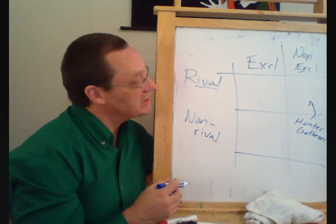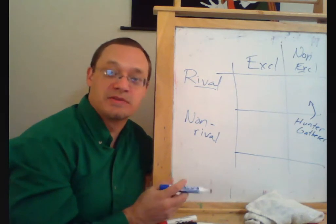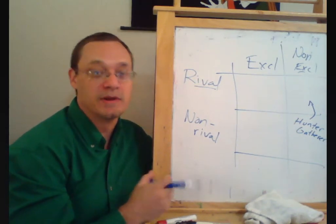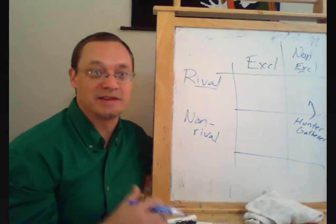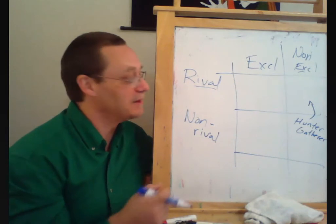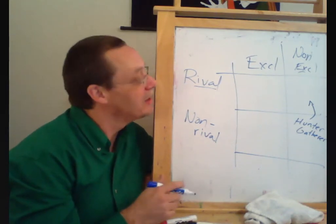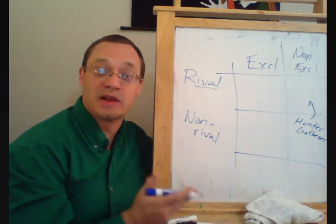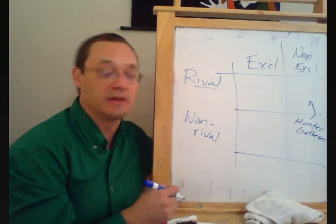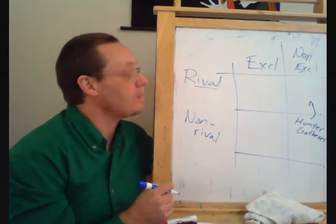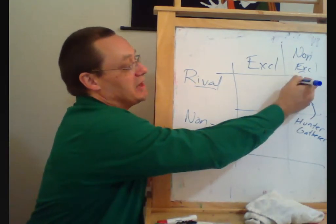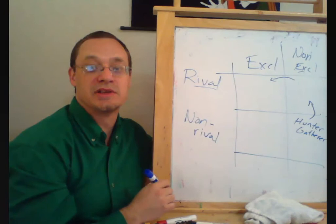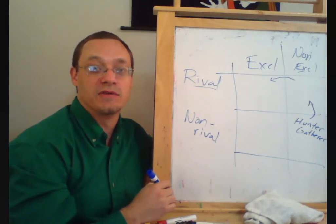At that point, societies face a choice: either they invent some kind of social institution — for example, you get to hunt on Monday, I get to hunt on Tuesday — or they develop some form of private property. Essentially, people are going to invent social institutions that shift us toward excludable, regulated use.